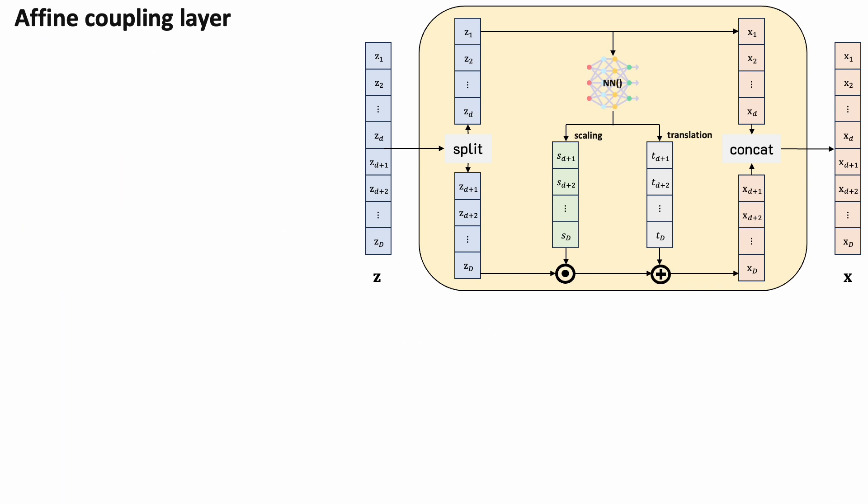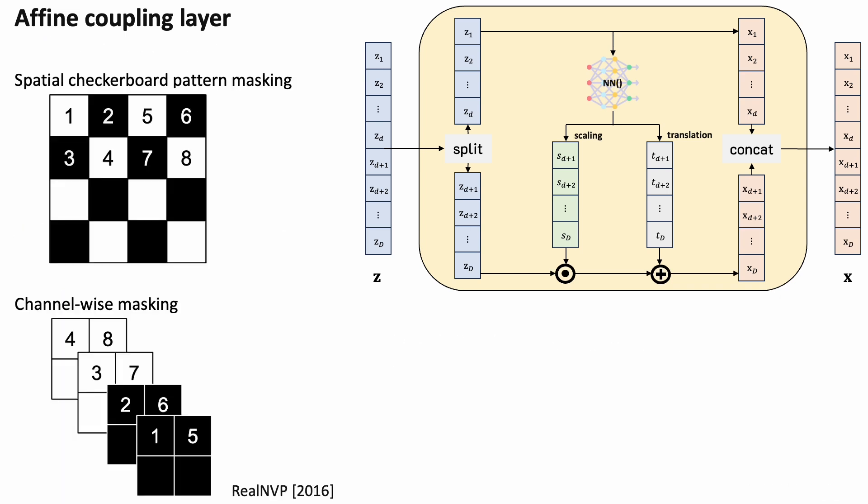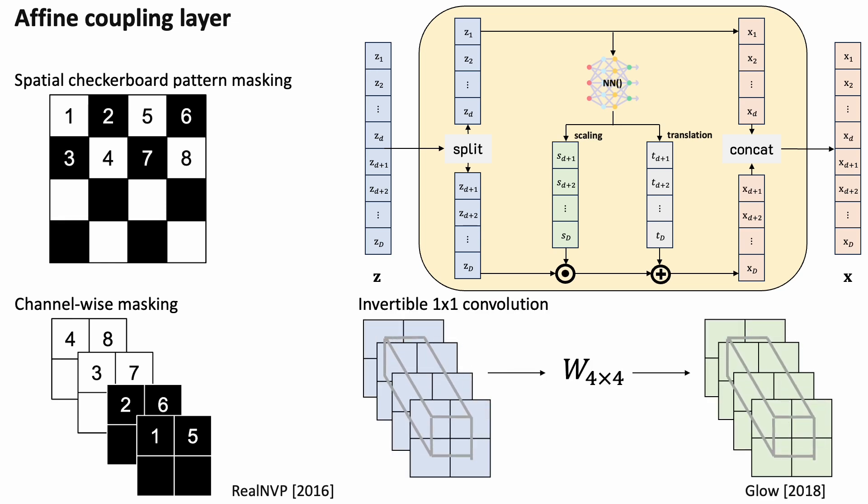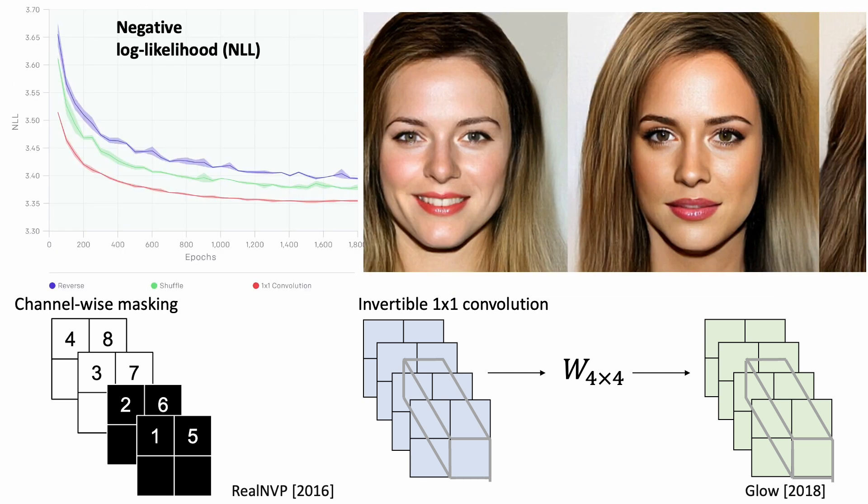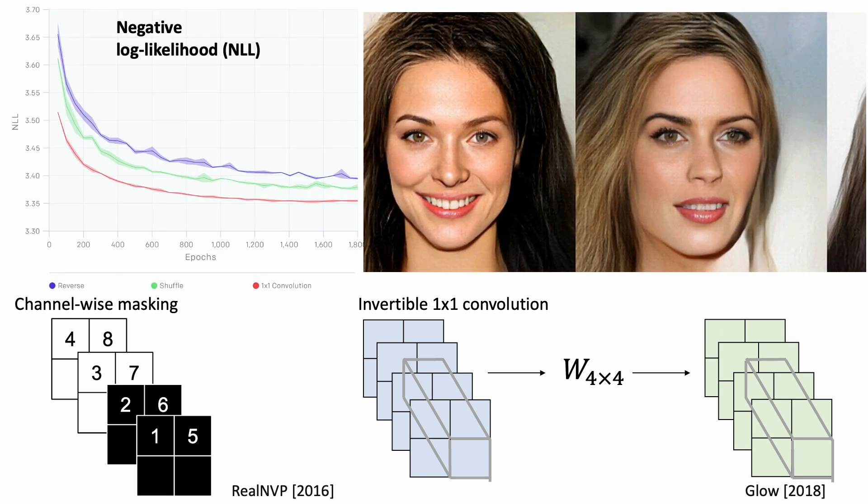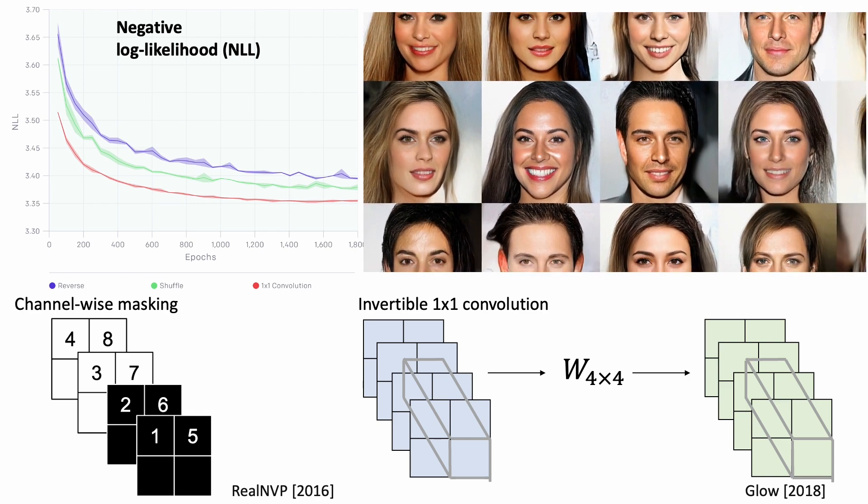When we stack these layers together, we need to shuffle these splits around to ensure that all the dimensions are updated. The original paper uses a special checkered pattern and a channel masking to create different splits. This type of permutation is later generalized by invertible 1x1 convolution. Here, training with 1x1 convolution achieves a lower negative log-likelihood and can generate high-resolution samples.